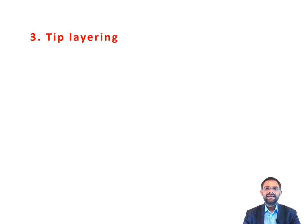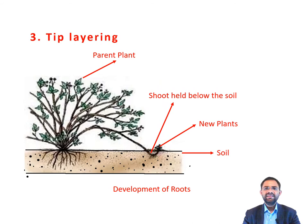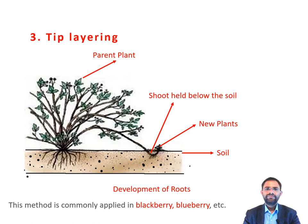The third one is tip layering. Tip layering differs from simple layering in that the tip of the stem of a plant is completely buried in the soil to develop roots near its tip. About 5 to 15 centimeters of the stem tip is inserted into the soil and watered regularly. When the tip develops roots, the portion of the stem is separated from the parent plant after 3 to 4 months. This method is commonly applied in blackberry and blueberry.